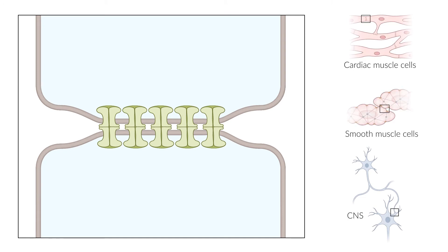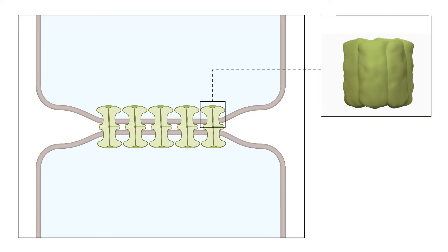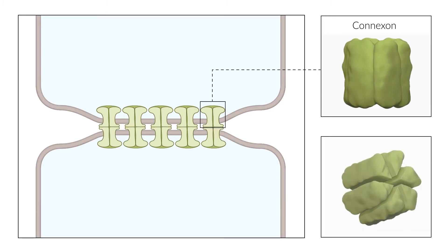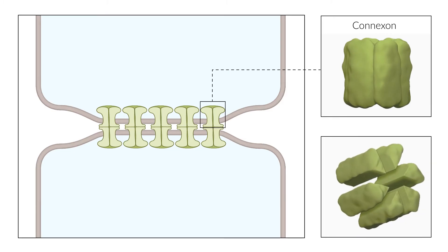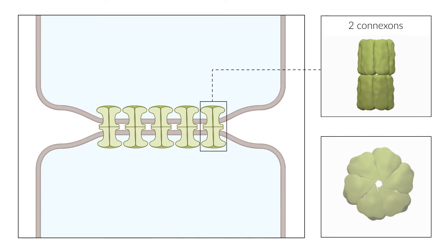They are formed by the interaction of cell contacts, building intercellular channels between two adjacent cells. These channels are composed of connexons, with each comprising six membrane-spanning proteins. If two connexons are located across one another, a central pore forms between the two cells that facilitates, for example, ions to flow through.